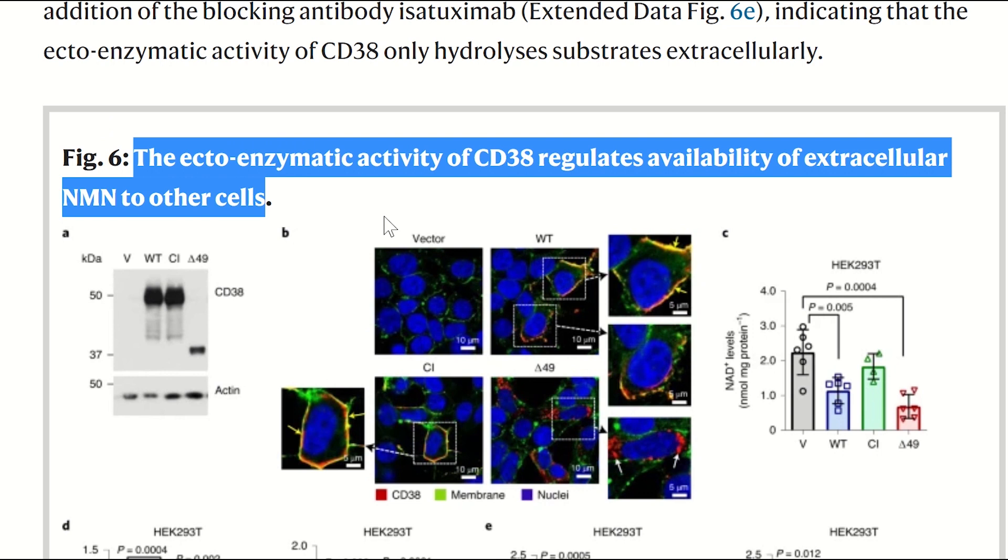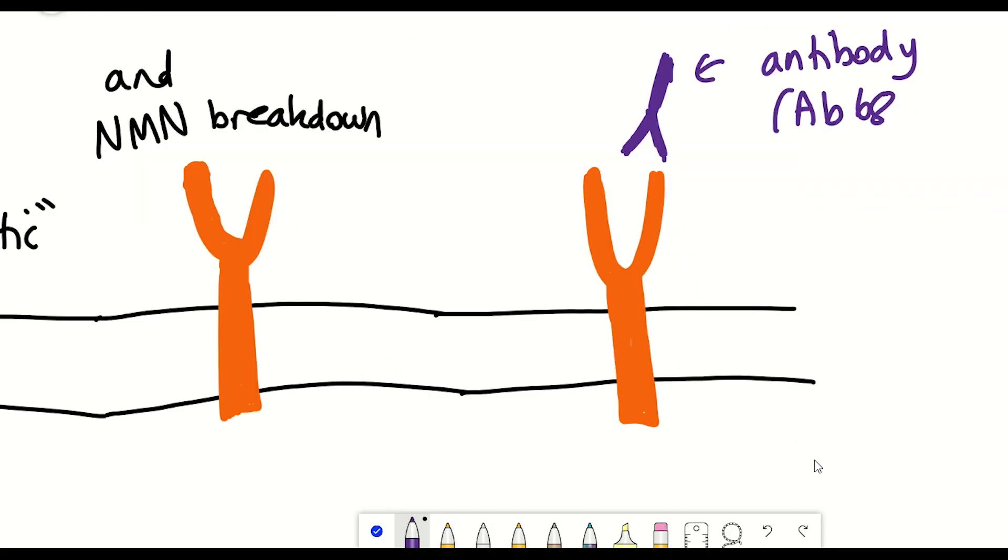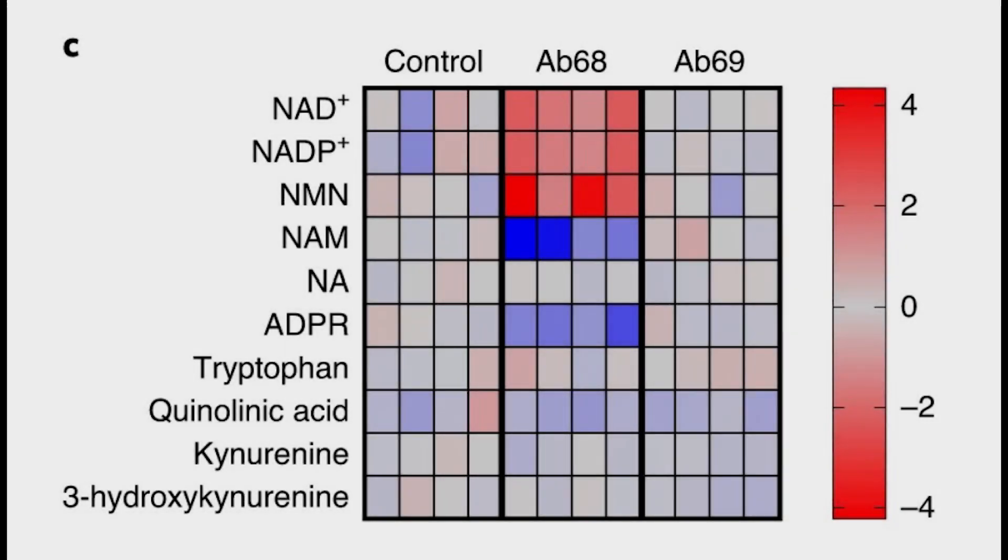But my favorite part of this study was when they administered one of the antibodies that inhibit CD38 activity, known as AB68. They administered this antibody to mice and found that it increased the NAD plus levels in the white adipose tissue. It also increased the levels of the NAD plus precursor NMN.